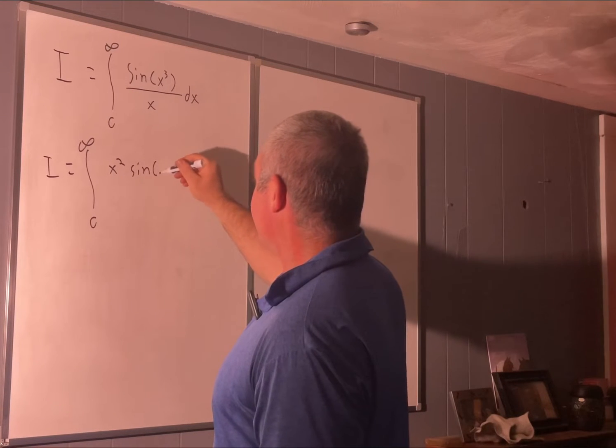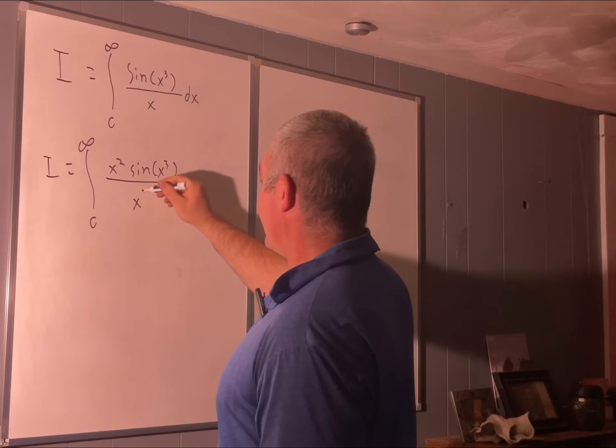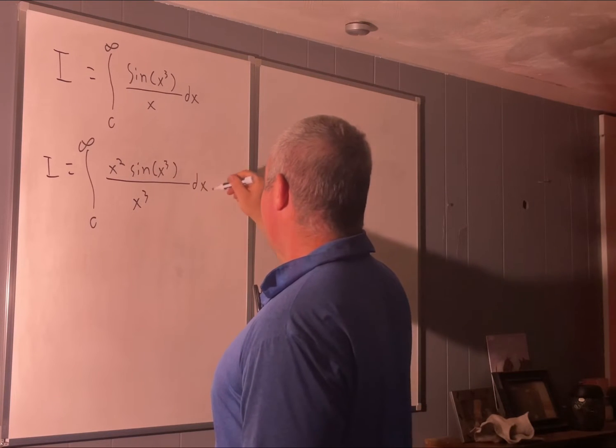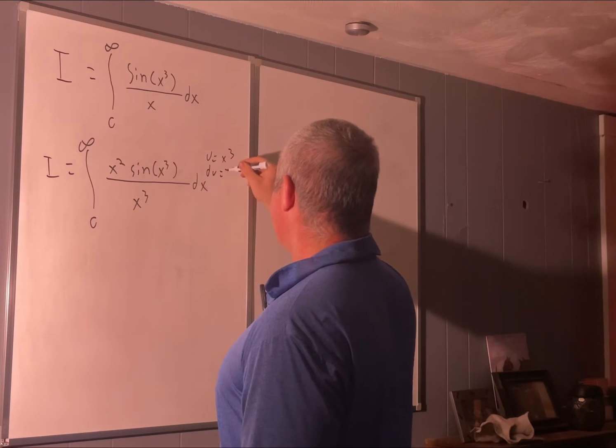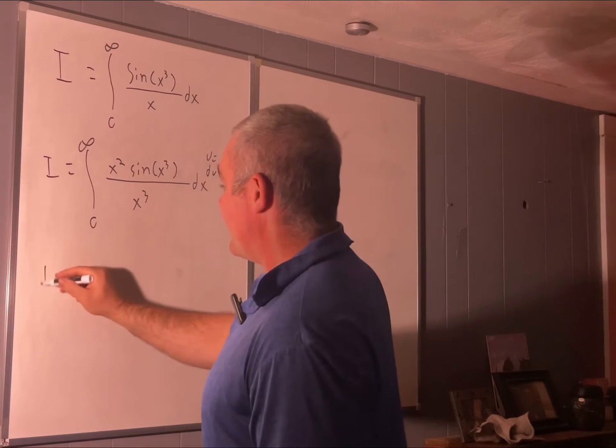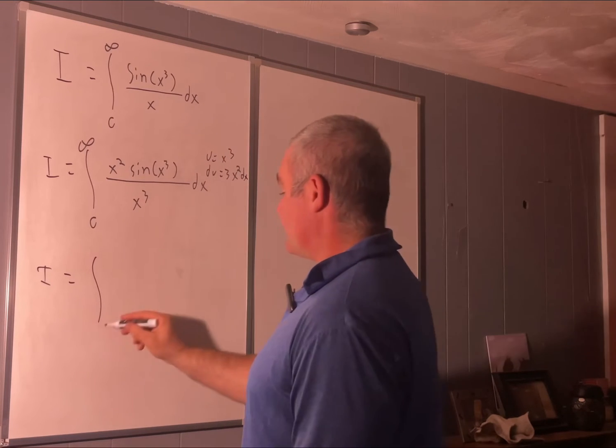Sine x cubed over x cubed dx. U equals x cubed, du is equal to 3x squared dx. I is equal to the integral. Your bounds don't change.